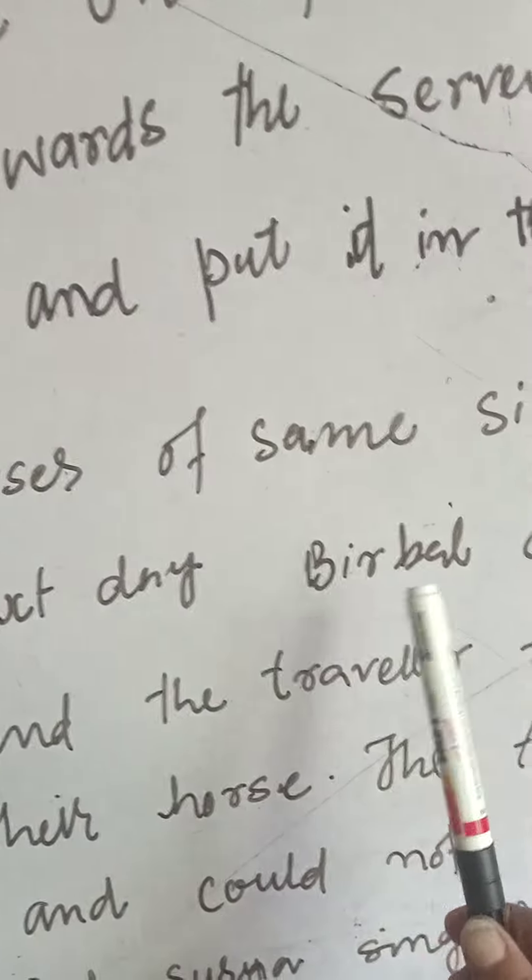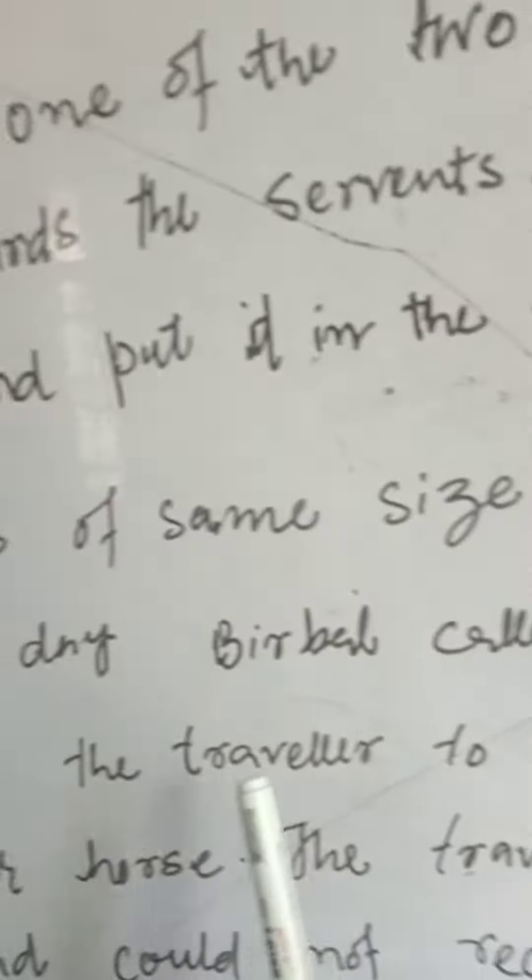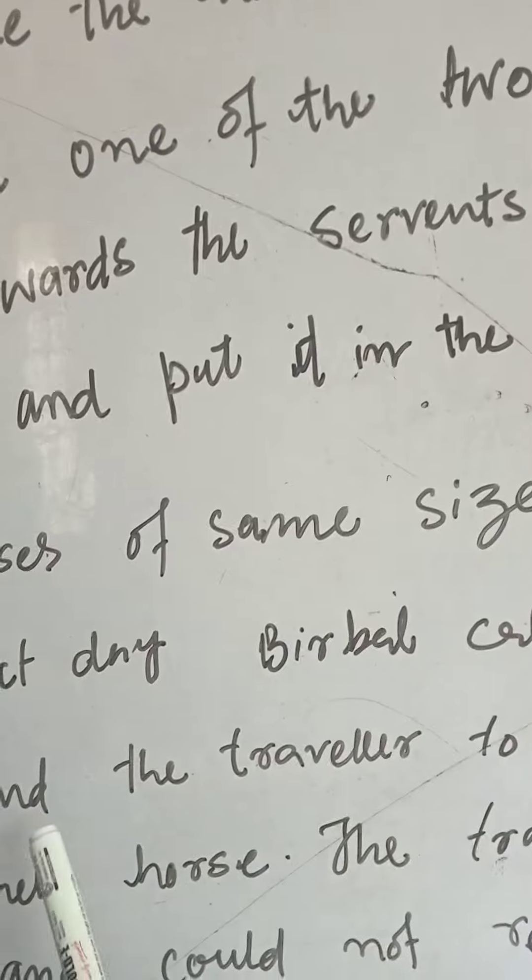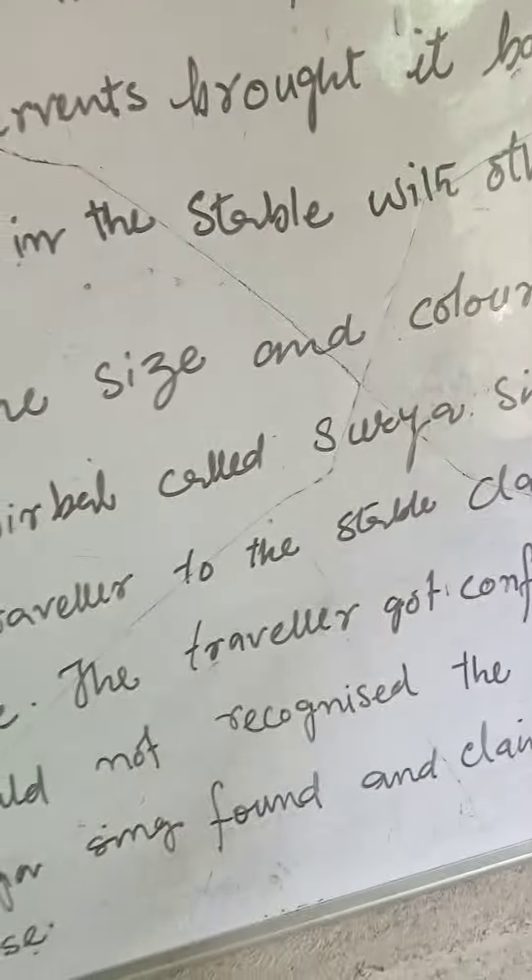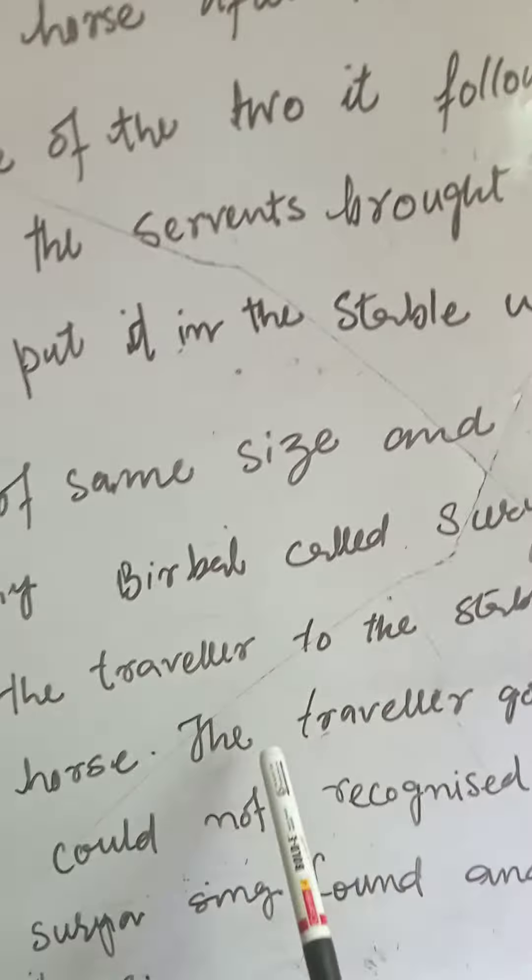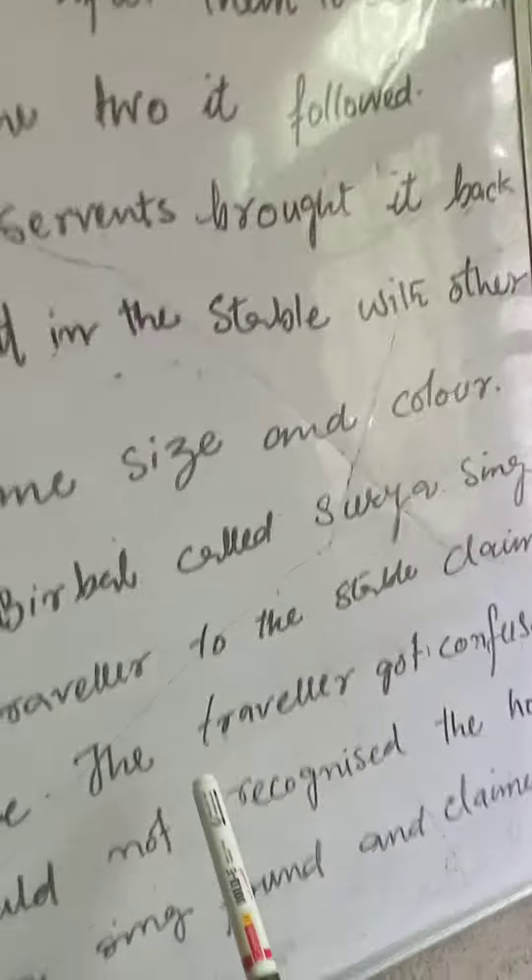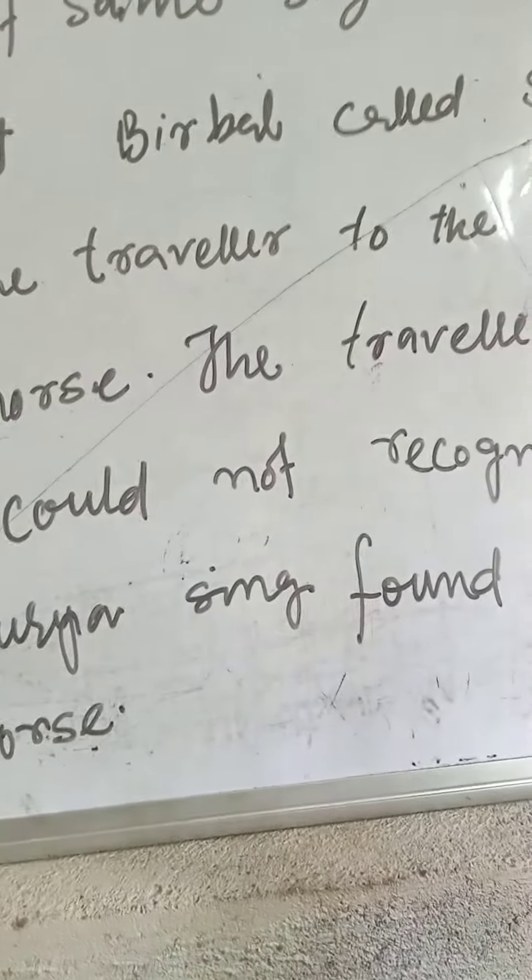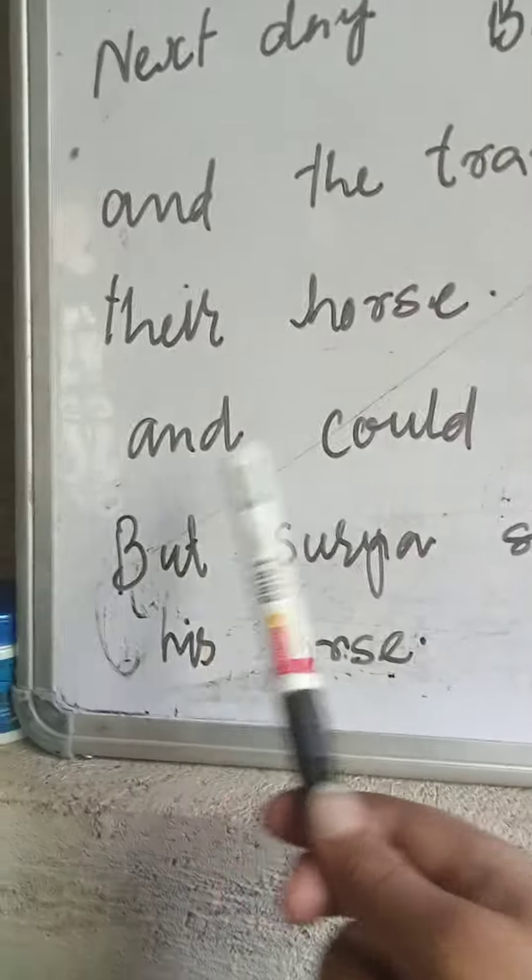The Sureasing and the traveler, one of travelers to the stable. The travelers got confused now. Where you say your traveler, in the image, and could not recognize him.